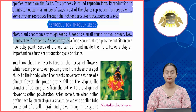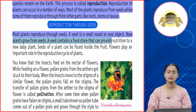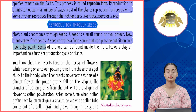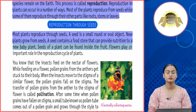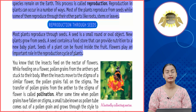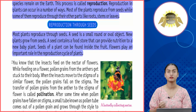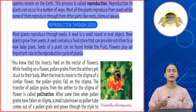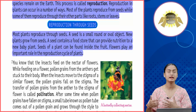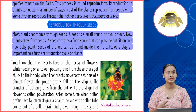Reproduction through seeds: most plants reproduce through seeds. A seed is a small round or oval object from which new plants grow. A seed contains a food store that provides nutrition to a new baby plant. Seeds of a plant can be found inside the fruit. Flowers play an important role in the reproduction cycle of plants.